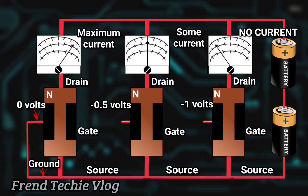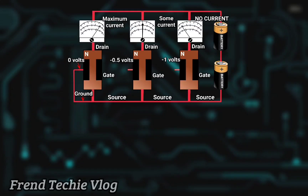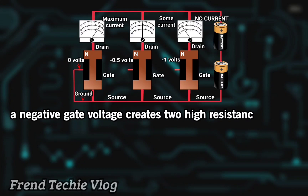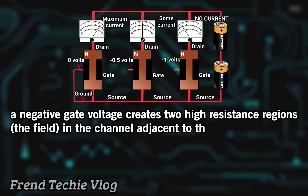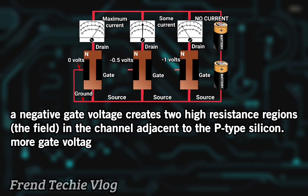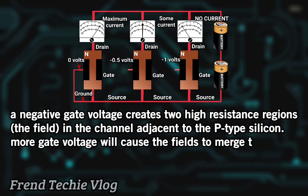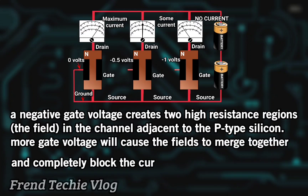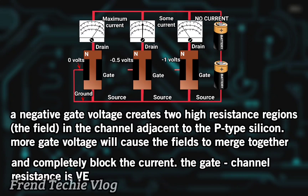This arrangement shows how an N-channel field effect transistor works. A negative gate voltage creates two high resistance regions — the field — in the channel adjacent to the P-type silicon. More gate voltage will cause the fields to merge together and completely block the current. The gate channel resistance is very high.